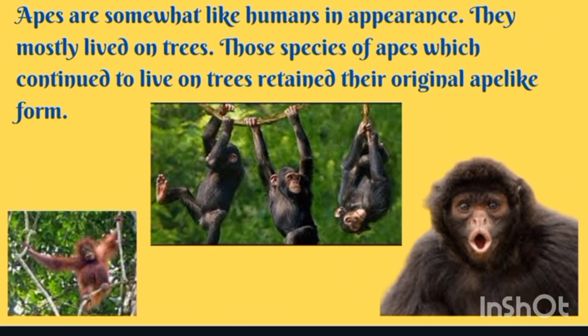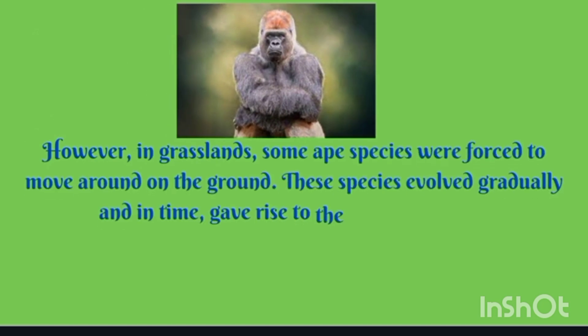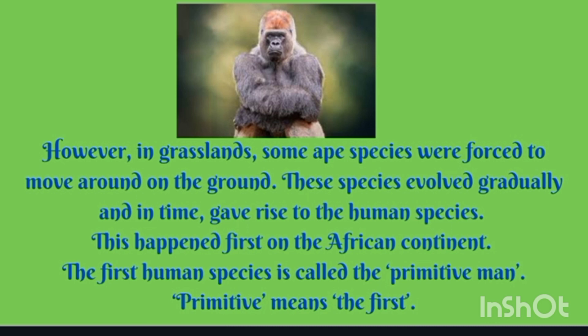Now, what are apes? Apes are somewhat like humans in appearance and mostly live on trees. Those species of apes that continue to live on trees retain their original ape-like form. However, in grasslands, some apes were forced to move around on the ground. These species evolved gradually and in time gave rise to the human species. Humans evolved from apes, and this happened first on the African continent. The first human species is called the primitive man.